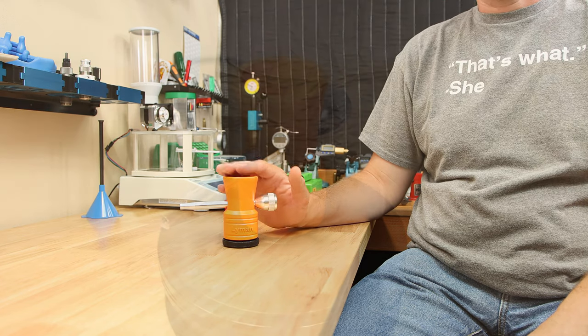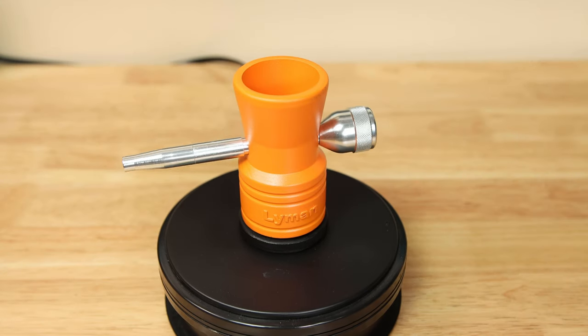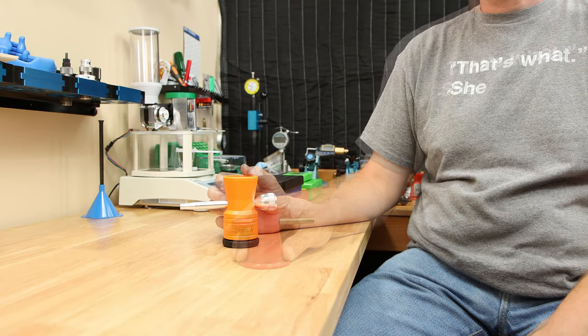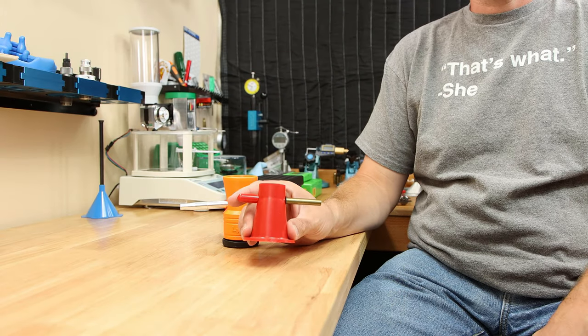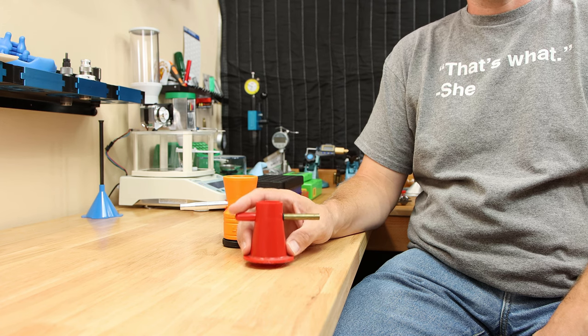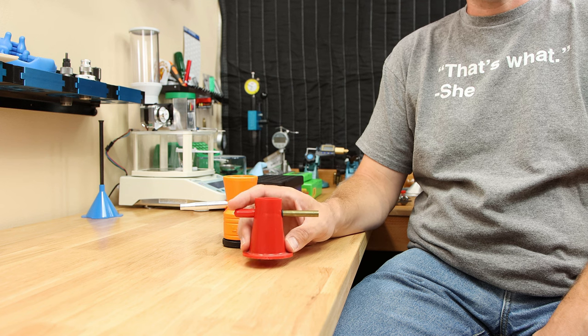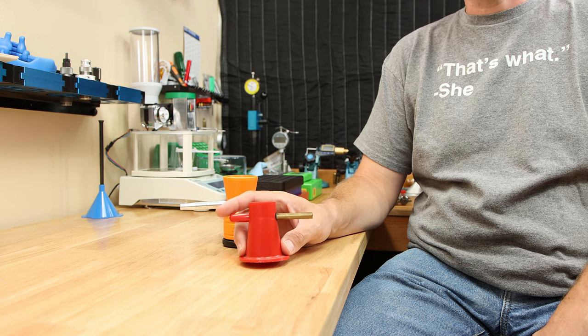The next thing we'll talk about is a powder trickler. This particular unit is obviously from Lyman, and this is one of the favorite models that I've used for several reasons. When I bought my first reloading kit, it came with this trickler. Now I'm not here to disparage anybody, but this just doesn't work very well. It doesn't have very much weight, it's not height adjustable, and frankly, it's not as easy to clean.